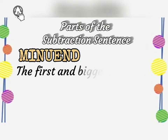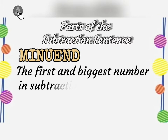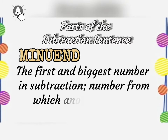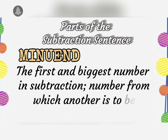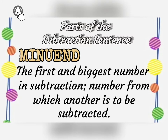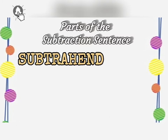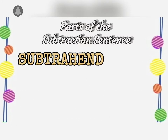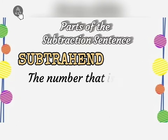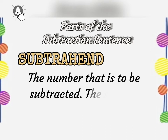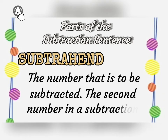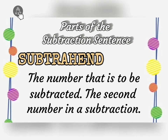Minuend: the first and biggest number in subtraction — the number from which another is to be subtracted. Subtrahend: the number that is to be subtracted, the second number in a subtraction.